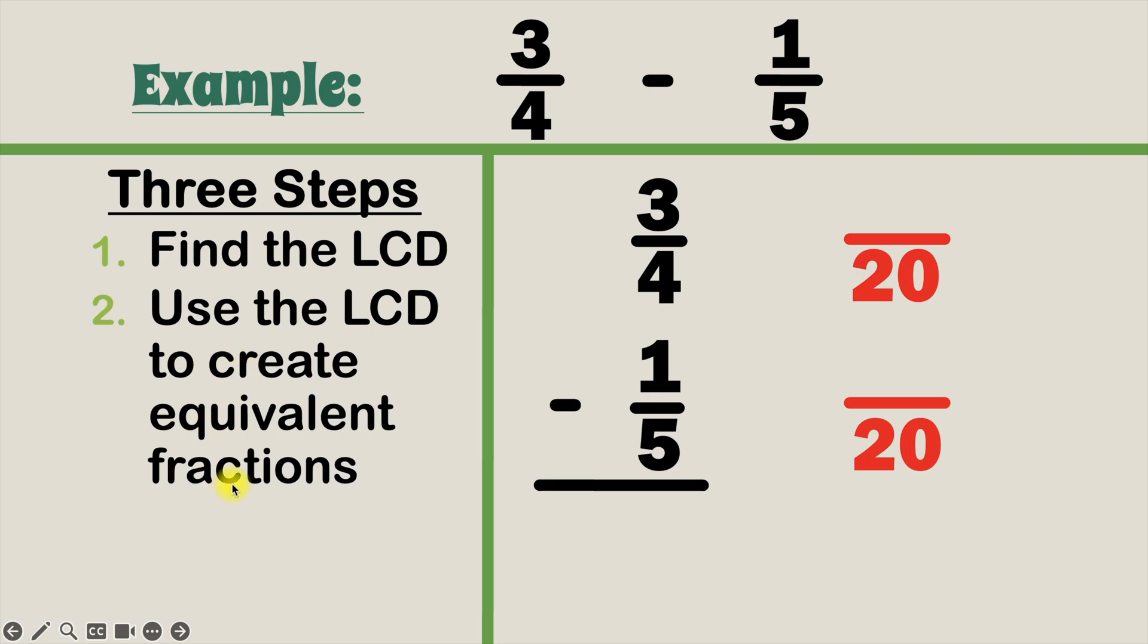Now that we know the LCD, let's go to step two which is to use the LCD to create equivalent fractions. So let's start with our first fraction 3 over 4. Four times what is 20? That's 4 times 5. And to create equivalent fractions we have to multiply the bottom of the fraction and the top of the fraction by the same value. So now we'll multiply 3 times 5 as well, and 3 times 5 equals 15. So our equivalent fraction is 15 over 20.